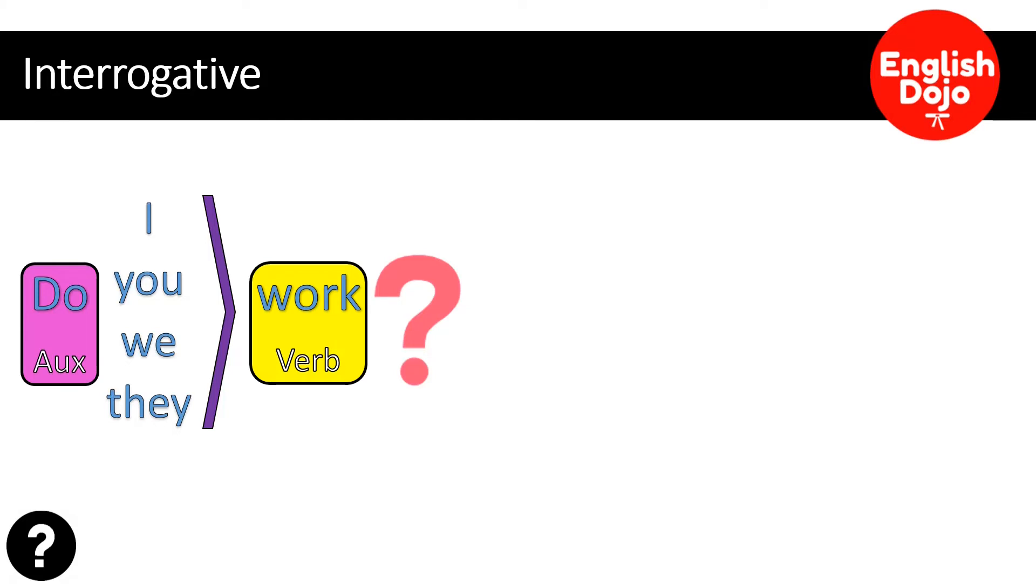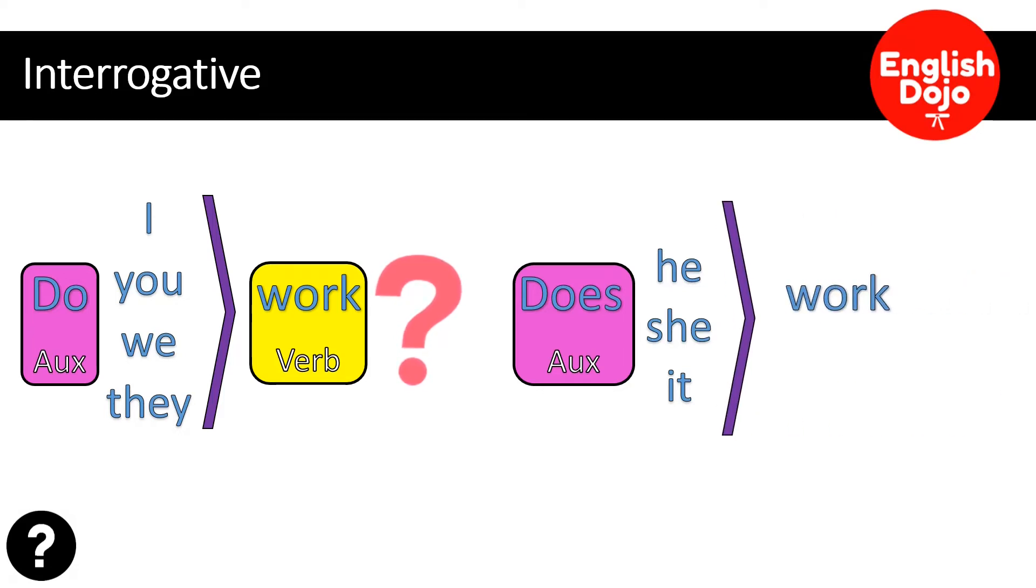Tenemos el verbo y el signo de interrogación. Fíjate que es sencillo. Entonces, si quieres preguntar si tú trabajas, es do you work? Do I work? Yo trabajo. Do you work? Tú trabajas. Do we work? Nosotros trabajamos. Do they work? Ellas trabajan. Y del otro lado tenemos a he, she, it. ¿Te acuerdas que hay que ponerle una E y una S? Pues ya lo vamos a hacer desde el comienzo. Y se lo ponemos al auxiliar. El verbo no se toca. Ya no le ponemos la S. Does he work? Él trabaja. Does she work? Ella trabaja. Does it work? Eso trabaja.